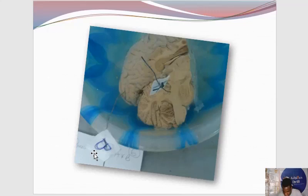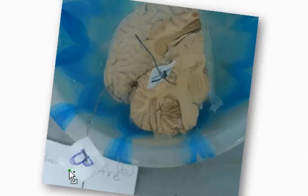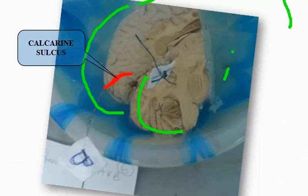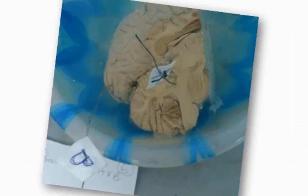Let's look at another question. There is a sulcus pinned here — can we trace it? Here is the cerebellum, so this is the posterior part of the brain. A horizontal sulcus is being pinned here. Do you know what sulcus that is? That is the calcarine sulcus. The calcarine sulcus is a horizontal sulcus separating the occipital lobe into a superior and inferior part. We already explained the parieto-occipital sulcus, which separates the parietal lobe from the entire occipital lobe. What is specifically pinned here is the calcarine sulcus.